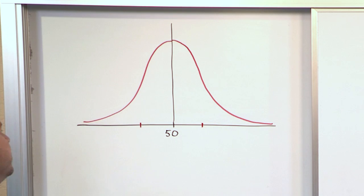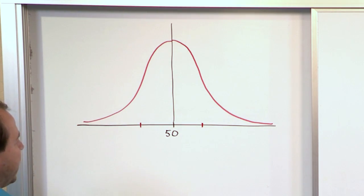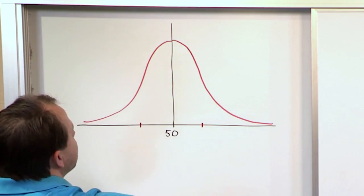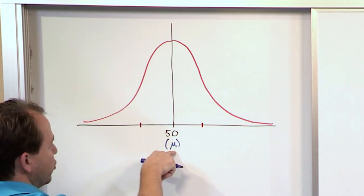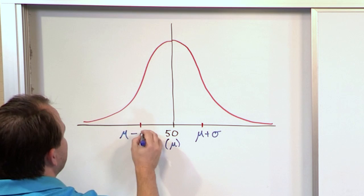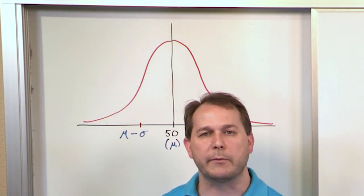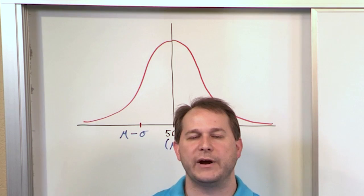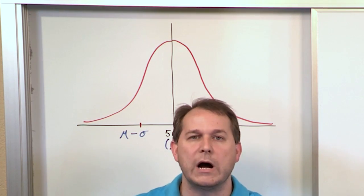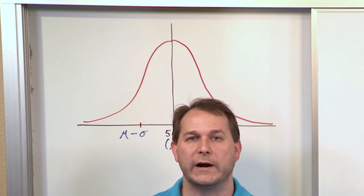The mean is 50. The spread — the standard deviation — describes the width of the curve. This value here is the mean. This value is the mean plus one standard deviation, and this value is the mean minus one standard deviation. Standard deviation describes how much spread the data has about the mean. A very large standard deviation means data spread far and wide symmetrically about the mean; a very small standard deviation means data clumped in a tall peak around the mean.